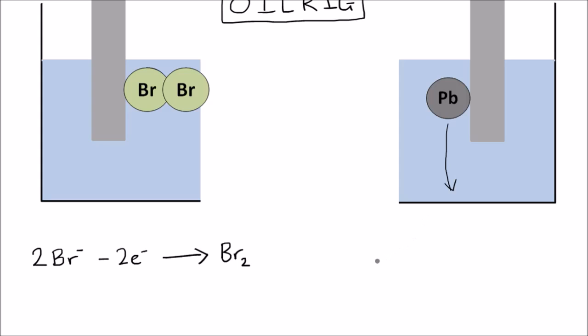At the cathode, we have a lead ion, Pb2+, and it gains two electrons and becomes a lead atom. So these would be the two half equations for this electrolysis reaction.